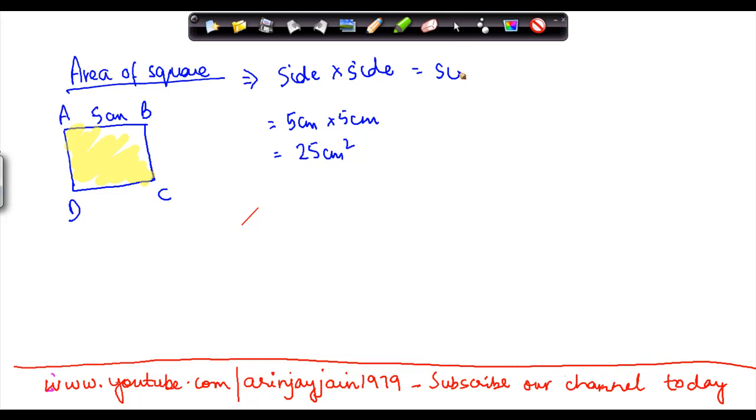Or it can also be written as side square. So you could have easily done this as 5 square. Again you would have got 25 cm square as the answer.